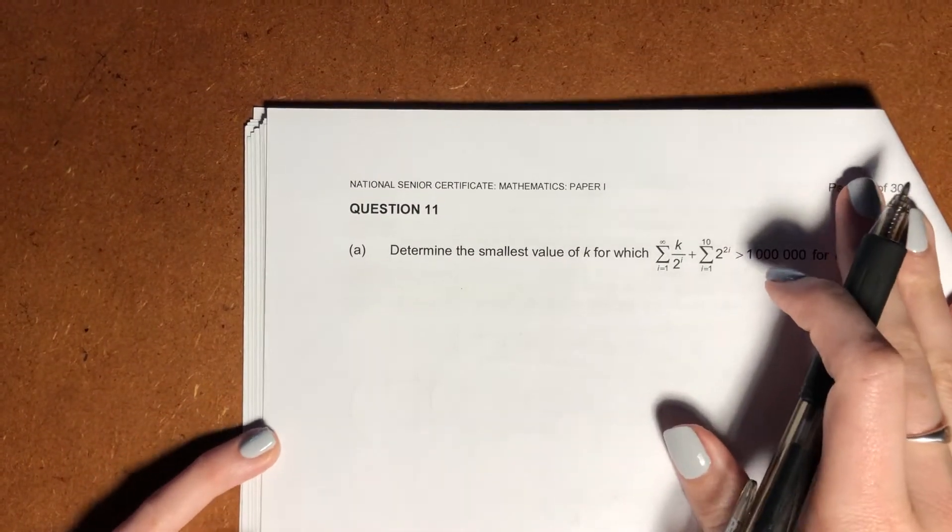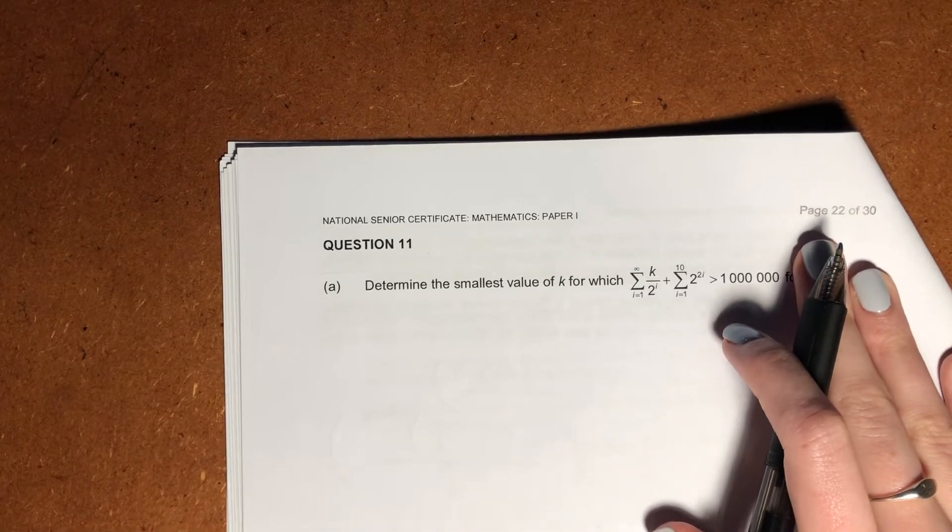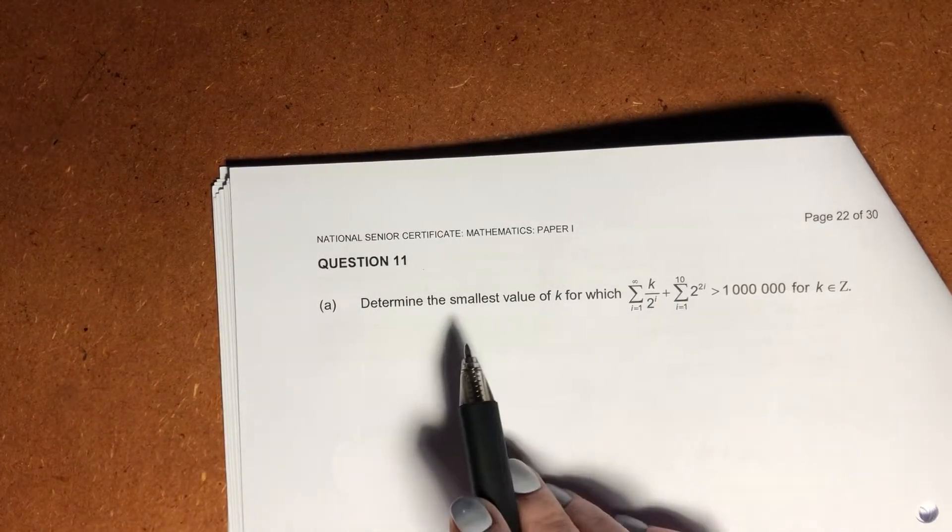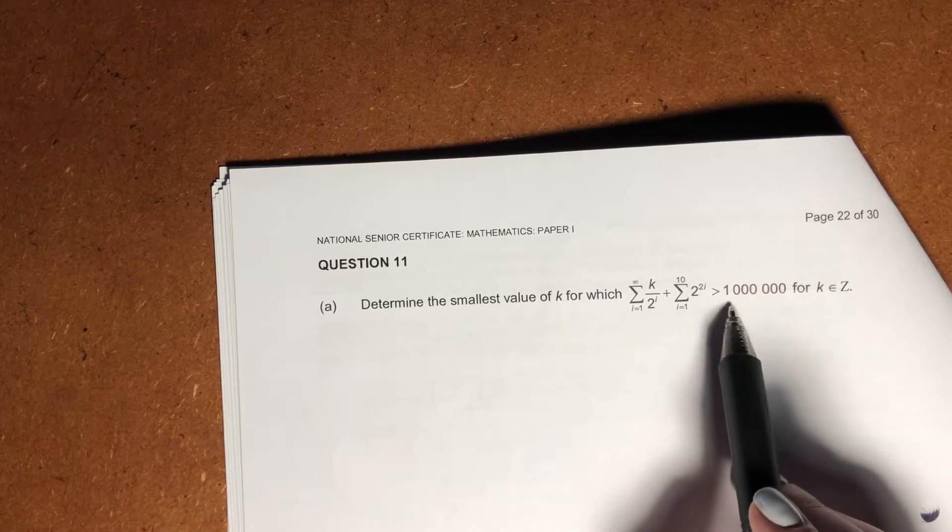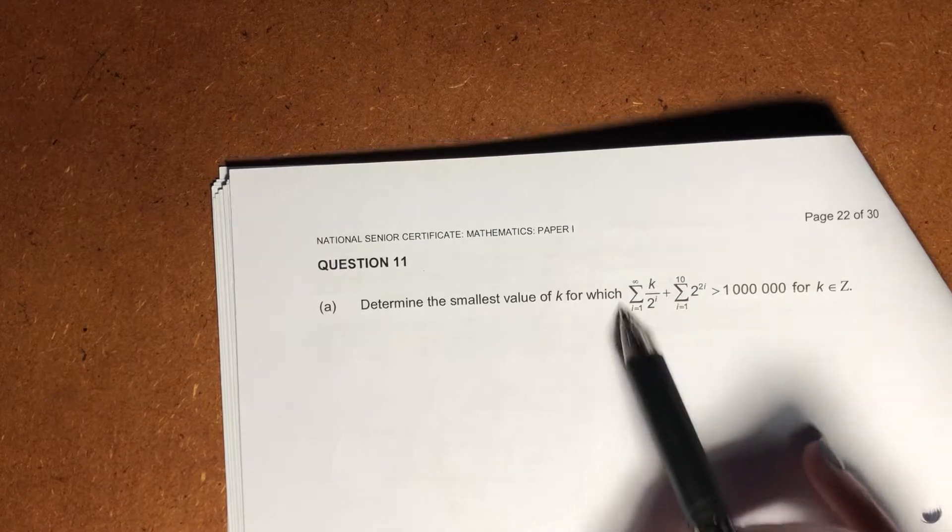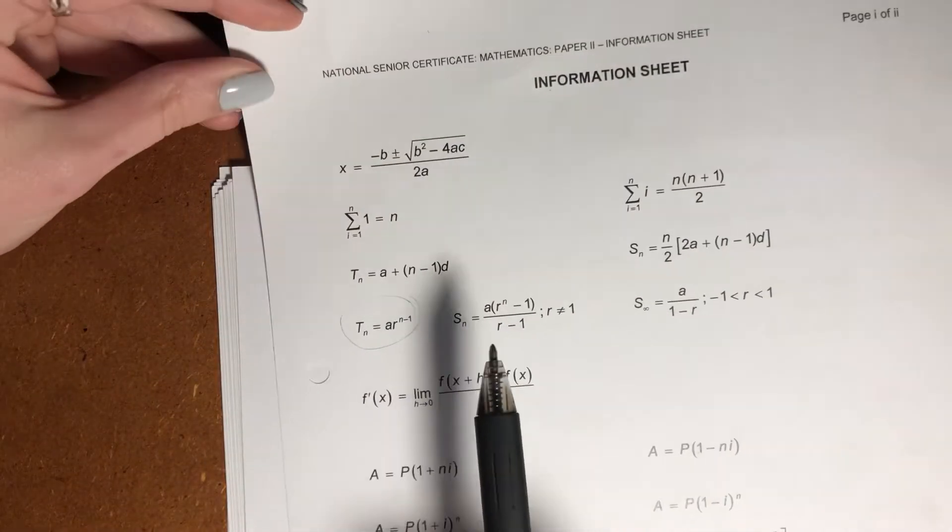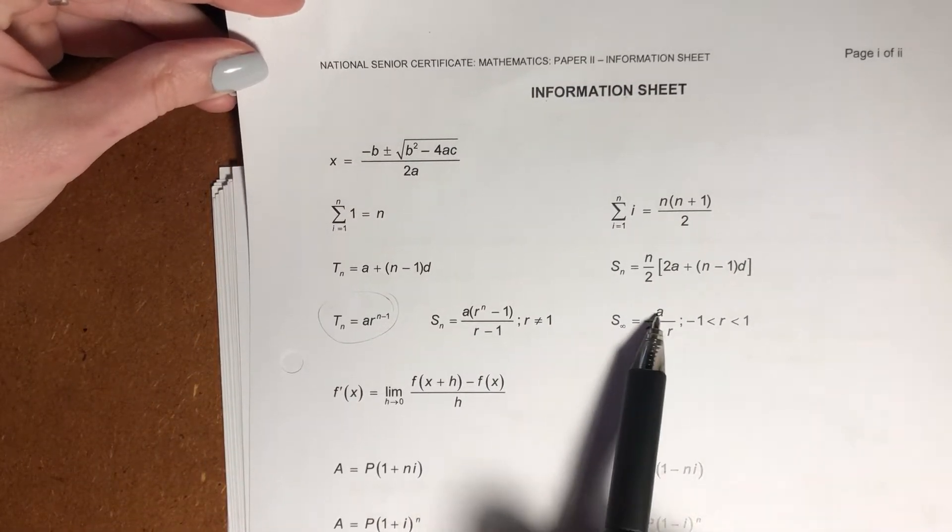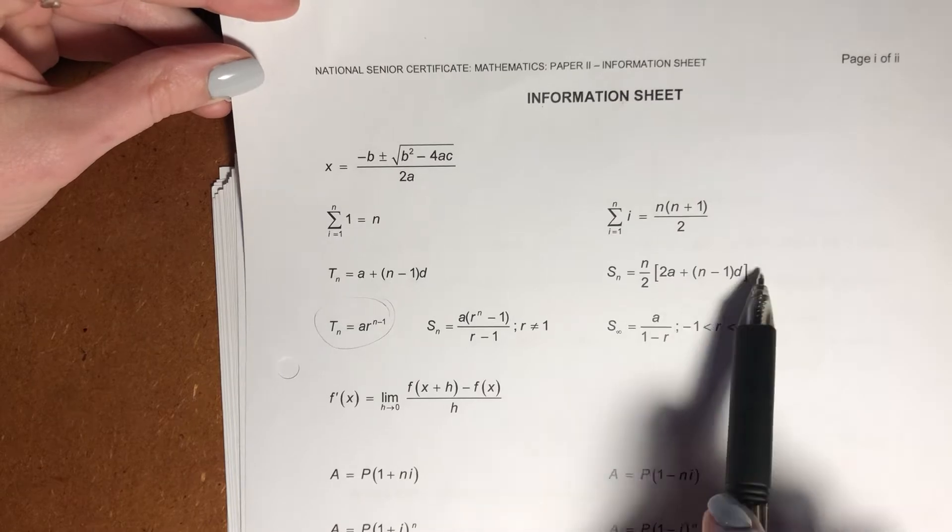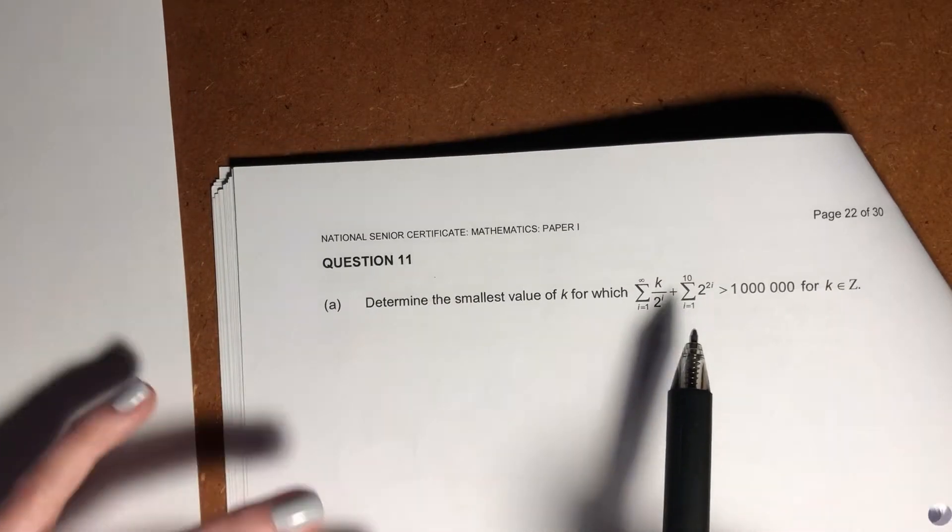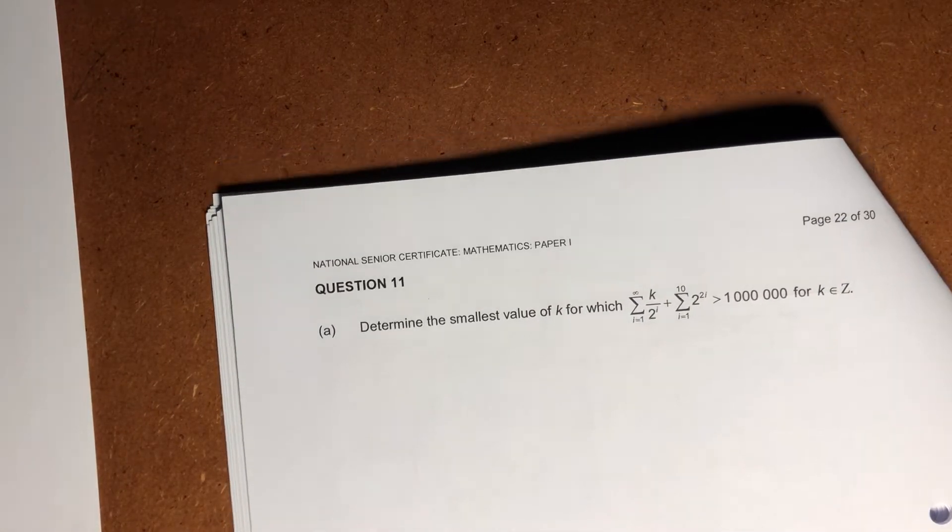Okay, let's look at question 11. We're nearing the end of the paper, so this is where you should start expecting to get a little bit confused, to be honest. But let's see what we can do. It says, determine the smallest value of k for which this sigma plus this sigma is greater than a million. So basically what we need to do is quantify each of these in terms of our formula where we sum a sequence.